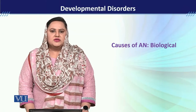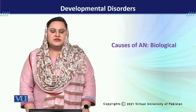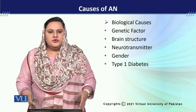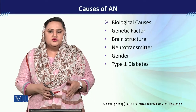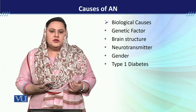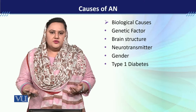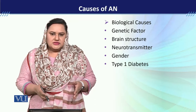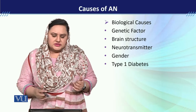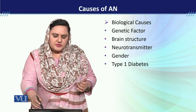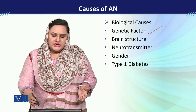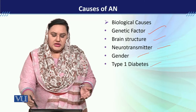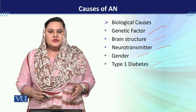Module 205: Causes of Anorexia Nervosa — Biological. Now we will discuss those causes which can cause anorexia nervosa. Under biological causes, we will discuss different factors: genetic factor, brain structure, neurotransmitter, gender, and type 1 diabetes.